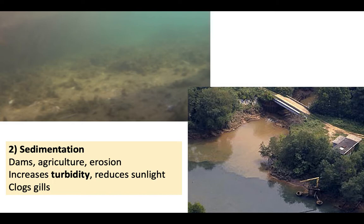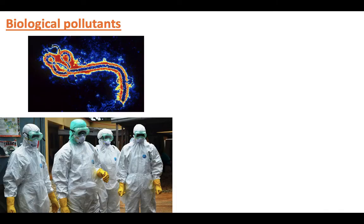Sedimentation is another form of physical pollution — any silt, sand, clay, or soil tossed up into a body of water that increases turbidity. This can happen behind dams, from agricultural runoff, or from erosion after clear-cutting. Sedimentation not only clogs gills but also blocks sunlight, making it difficult for organisms to see and for plants to photosynthesize.